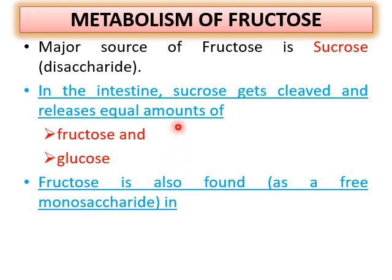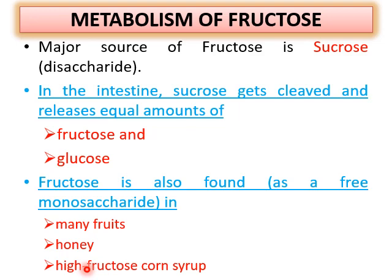Now we are going to start metabolism of fructose. A major dietary source of fructose is sucrose, which is a disaccharide. In the intestine, sucrose undergoes cleavage and results in the production of equimolar amounts of fructose and glucose. Fructose can also be found as a free monosaccharide in most fruits, in honey, and as the main component of high fructose corn syrup.